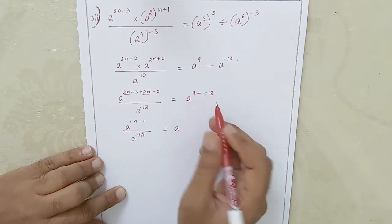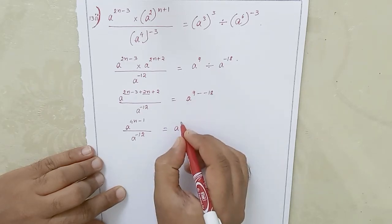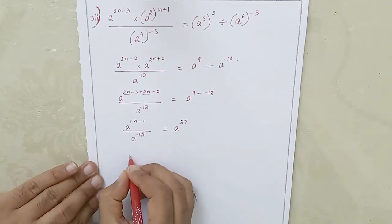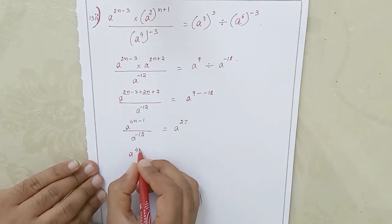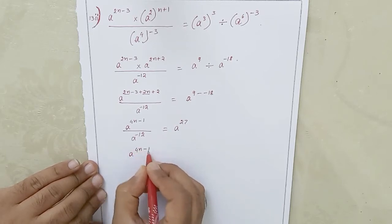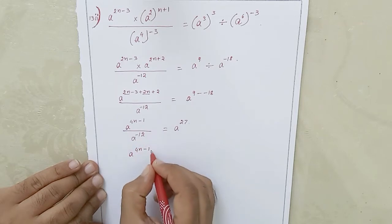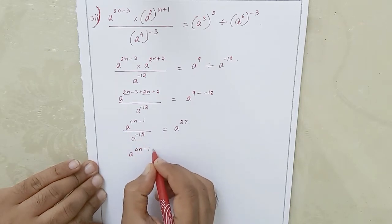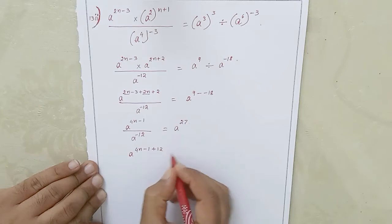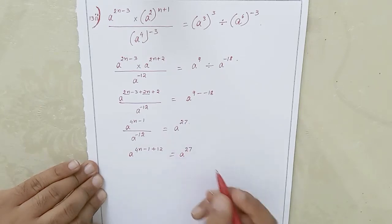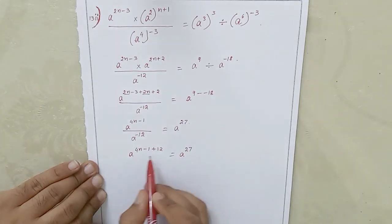Simplifying further, the left side becomes a power 4n minus 1, divided by a power minus 12. Dividing means subtracting exponents, so it becomes a power 4n minus 1 minus minus 12. Minus of minus 12 becomes plus 12, so the left side is a power 4n minus 1 plus 12, which equals a power 27.